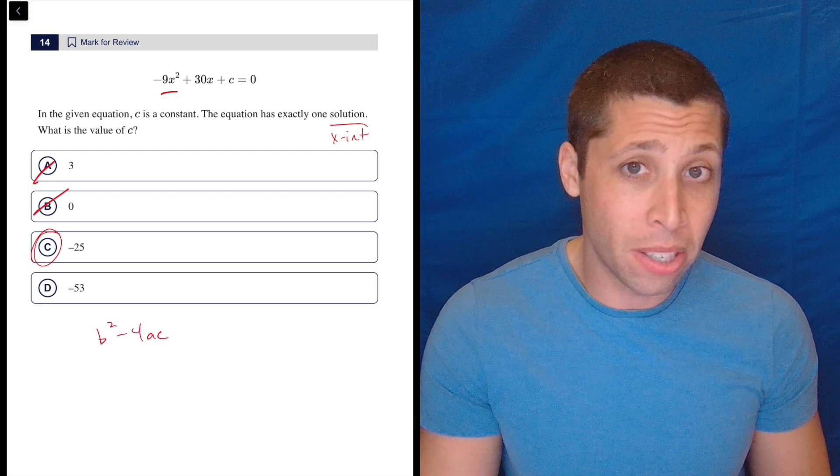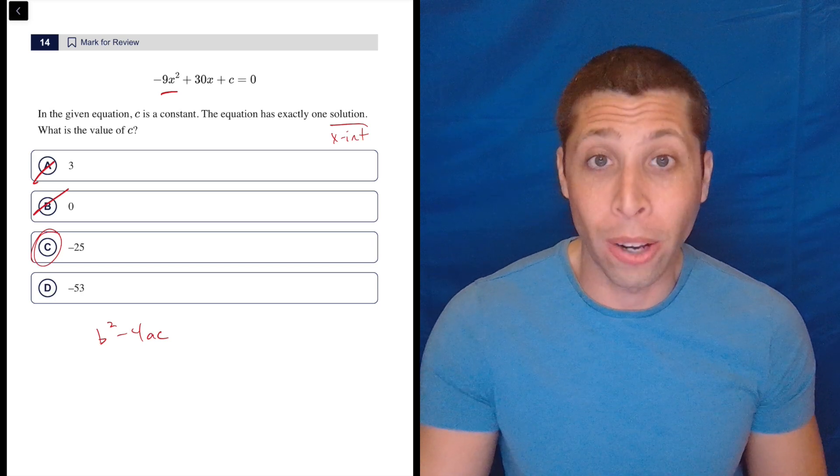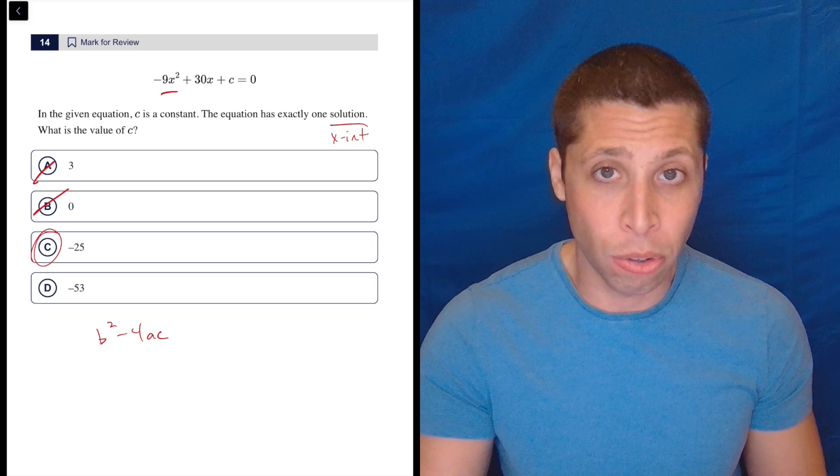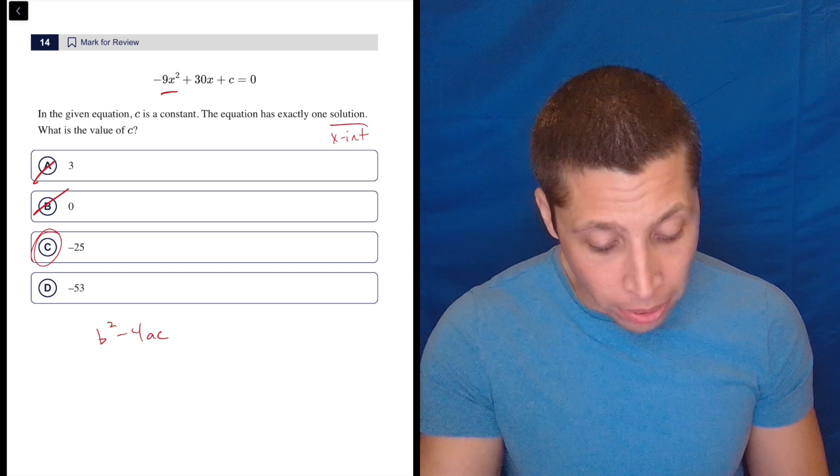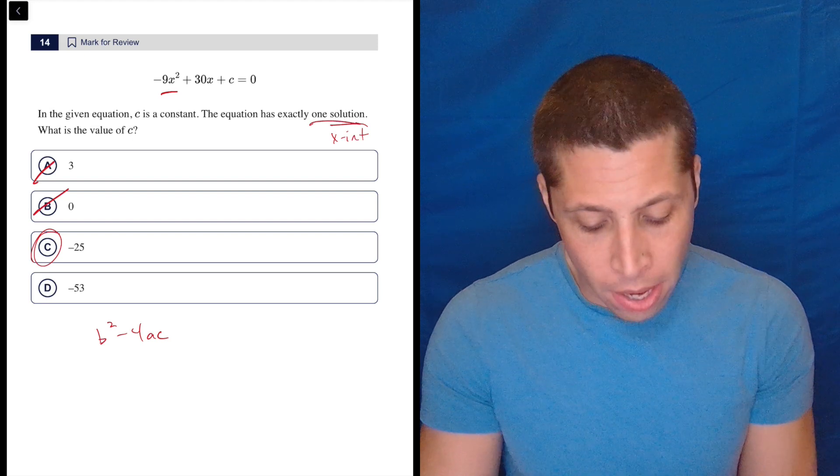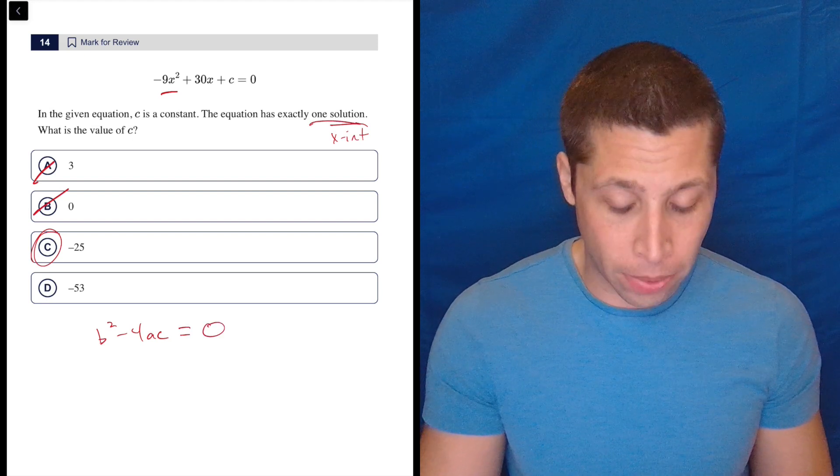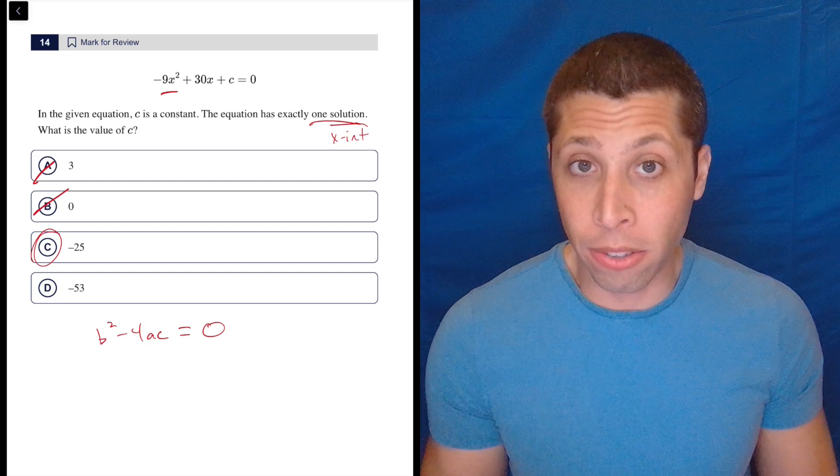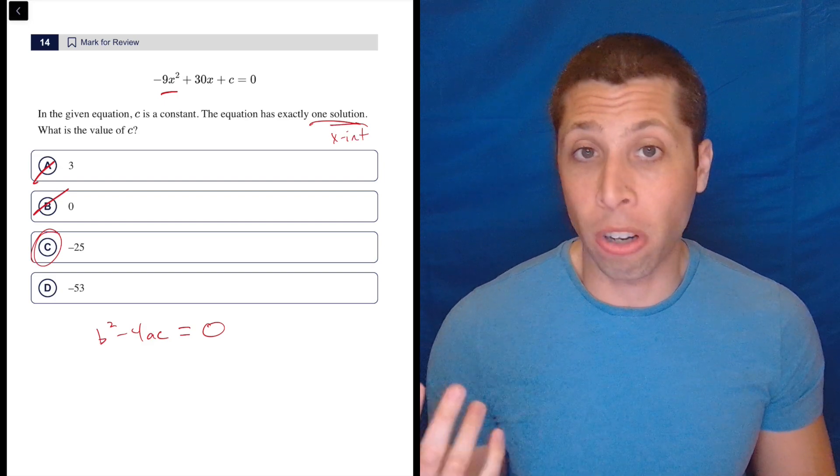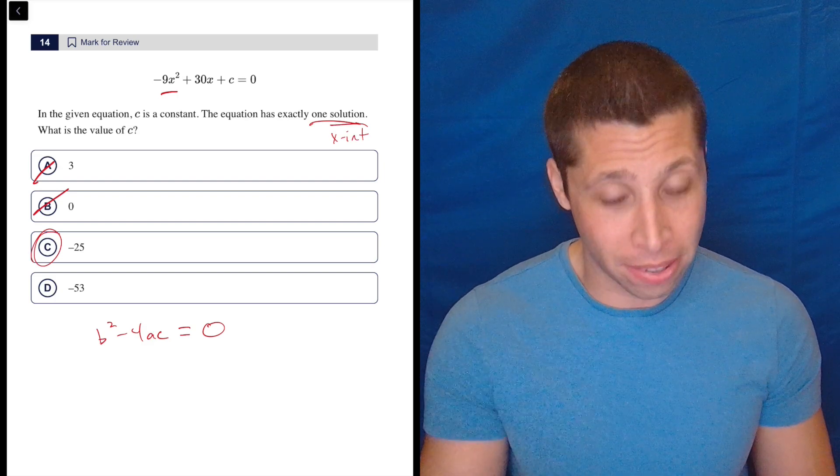I would rather just know how to do B squared minus 4AC. That's our discriminant. That always tells us the number of solutions for a quadratic without actually needing to find those solutions. And from memory, I know that if there is one solution, the discriminant is equal to zero. If there's two solutions, the discriminant is greater than zero. If there are no solutions, the discriminant is less than zero. You've got to memorize that.